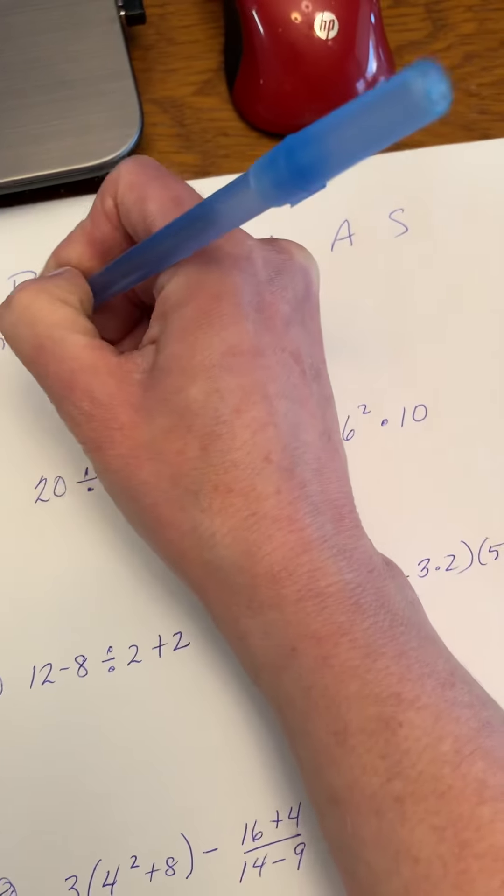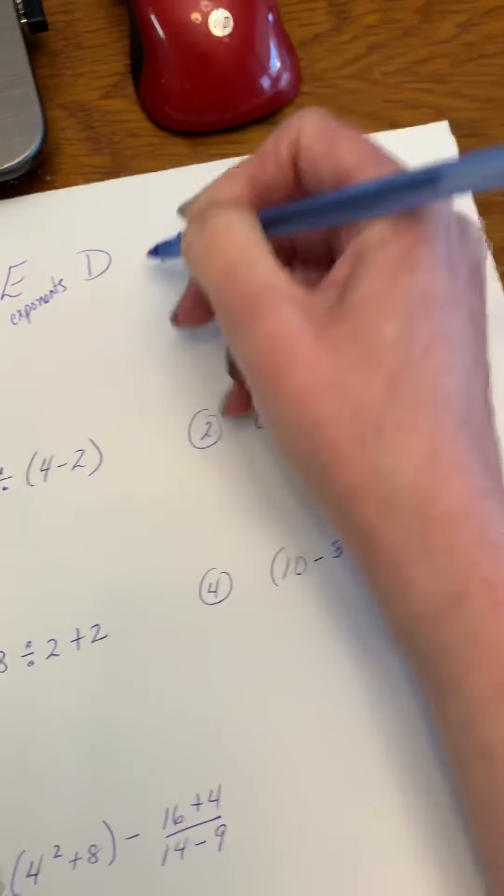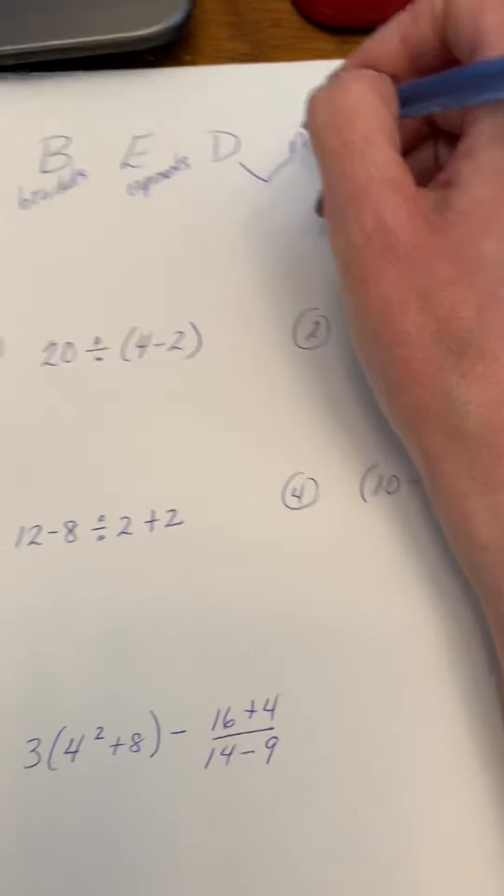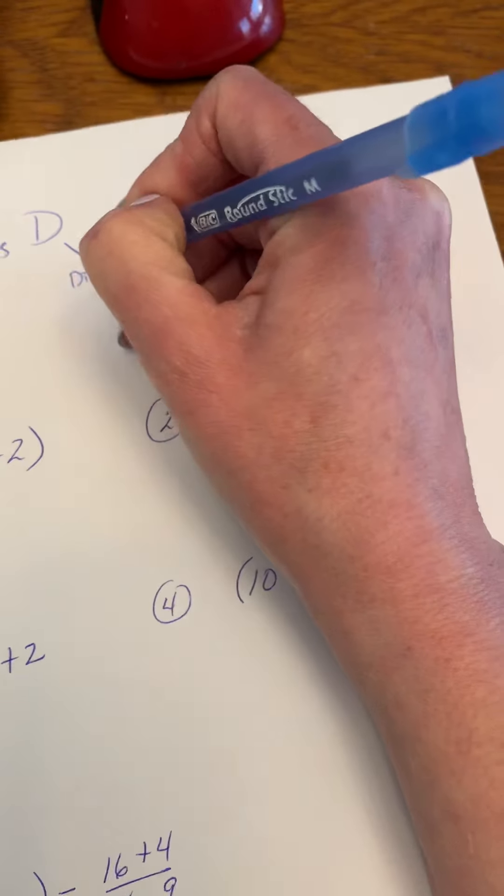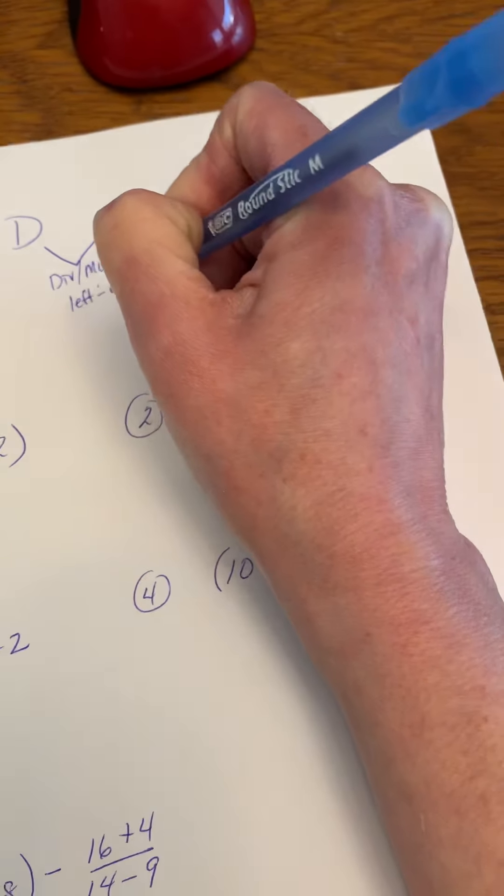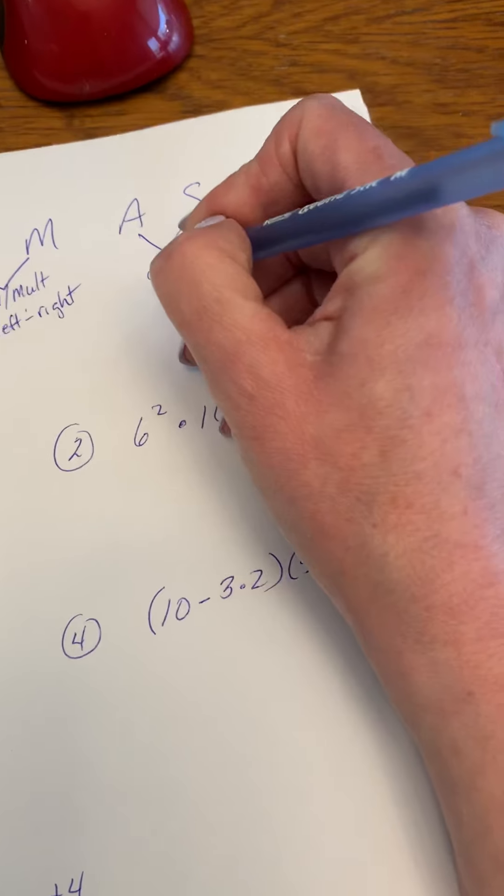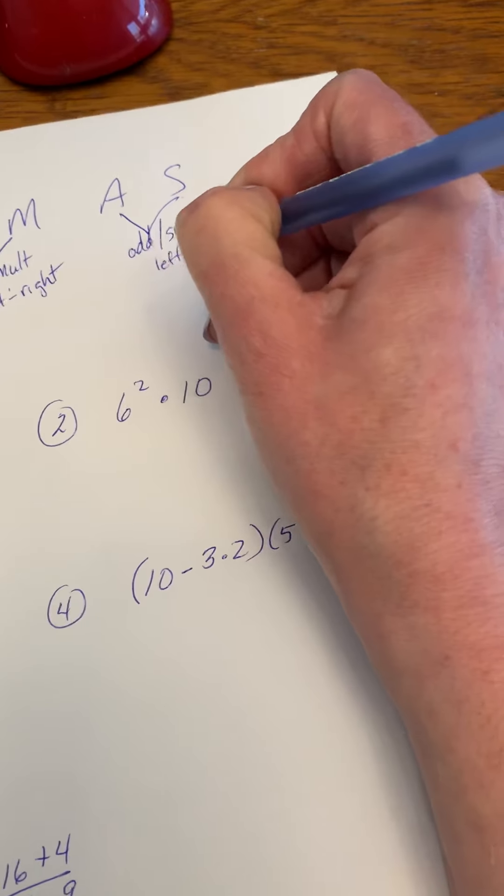We talk about brackets get done first, then exponents, and then division and multiplication in the order that they appear. Some kids get confused and they think we always have to do division first, but it's division and multiplication from left to right, just like you read a book. And then the next set is addition and subtraction, and again that's from left to right.